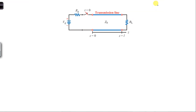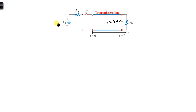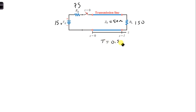The first thing I recommend you do in this problem is label and write down everything on the transmission line that you know. For example, Z naught is equal to 50 ohms, VG is 15 volts, RG is 75 ohms, RL is 150 ohms, and capital T is 0.5 microseconds.